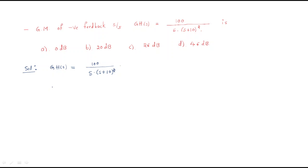What is gain margin? The formula for gain margin is: 20 log of the magnitude of 1/GH(jω) evaluated at the phase crossover frequency. So first we need to find the phase crossover frequency, then we will find out this magnitude value.